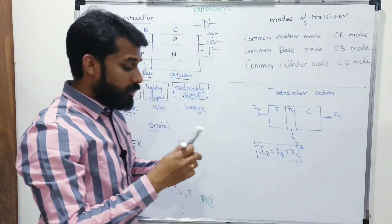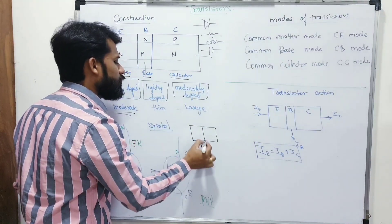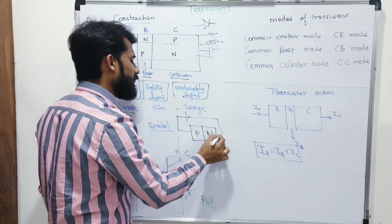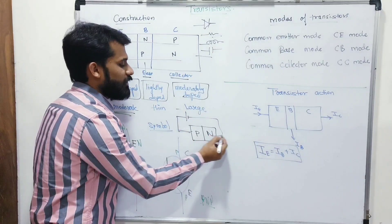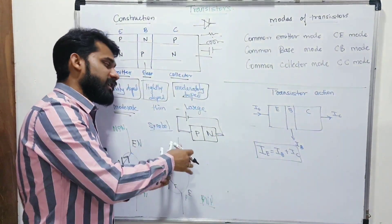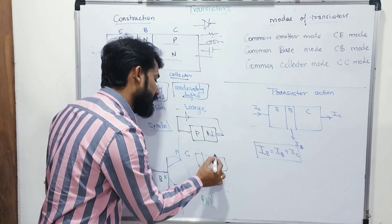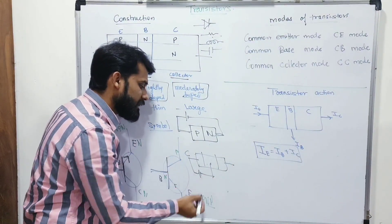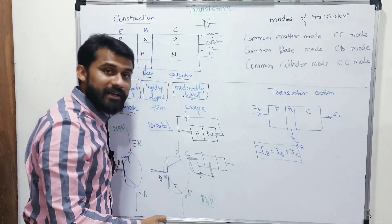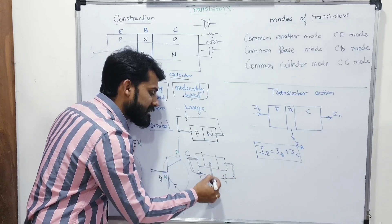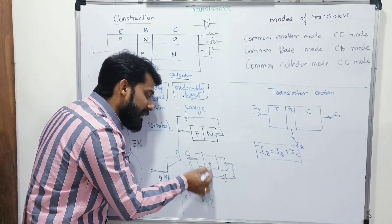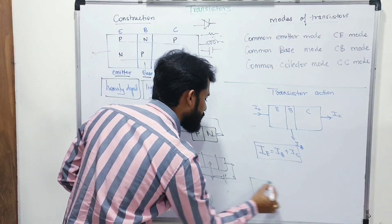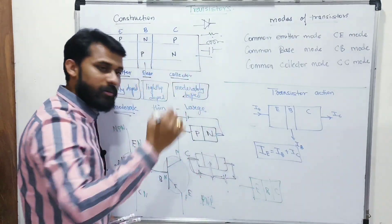Transistor modes of connection: unlike a PN junction diode which has only two terminals and one option (forward or reverse bias), a transistor has three terminals, so at least two batteries are needed. If I connect a battery between base and emitter, and another between collector and base, then the common terminal is the base — this is common base configuration.